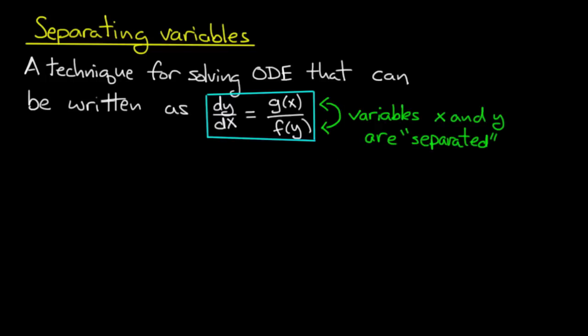Now it's called separating variables because in some sense I've separated the variables x and y. I have on the top g, a function of x alone, and on the bottom f, a function of y alone. Now I invite you to think a little bit about how specific or how restrictive it is to assume that I can write this right hand side as a ratio like this.